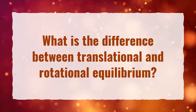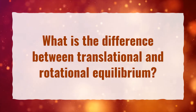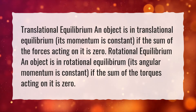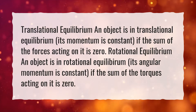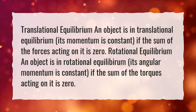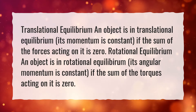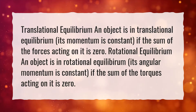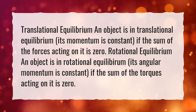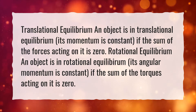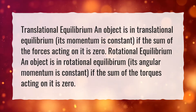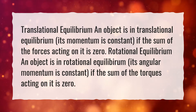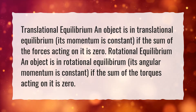What is the difference between translational and rotational equilibrium? Translational equilibrium: an object is in translational equilibrium if its momentum is constant — that is, if the sum of the forces acting on it is zero. Rotational equilibrium: an object is in rotational equilibrium if its angular momentum is constant — that is, if the sum of the torques acting on it is zero.